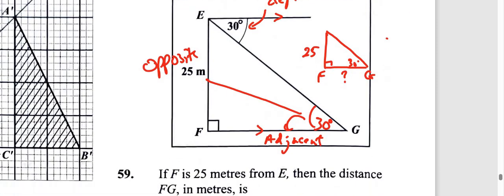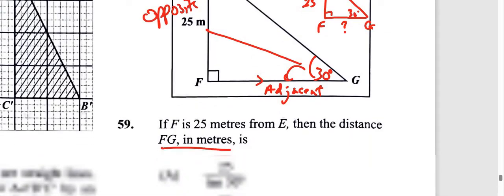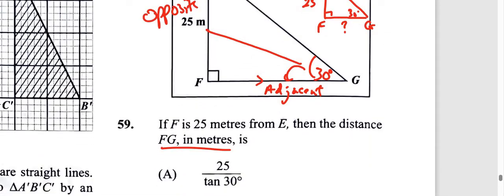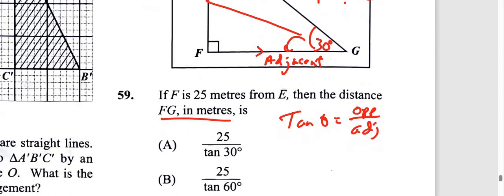We're asked to find the length FG. FG is adjacent, we're given the opposite, so we deal with tangent because tangent is basically opposite divided by adjacent. Let's enter the information that we have. We know that tan...